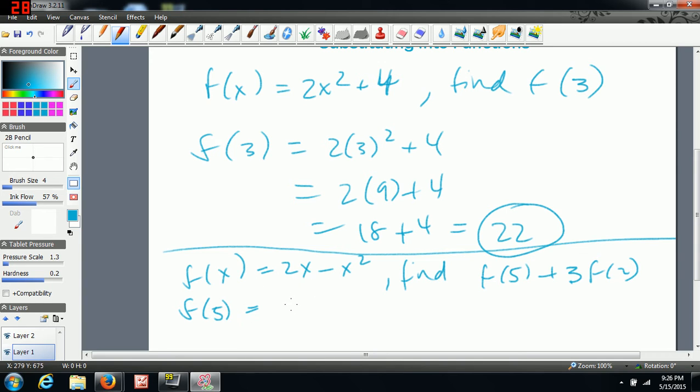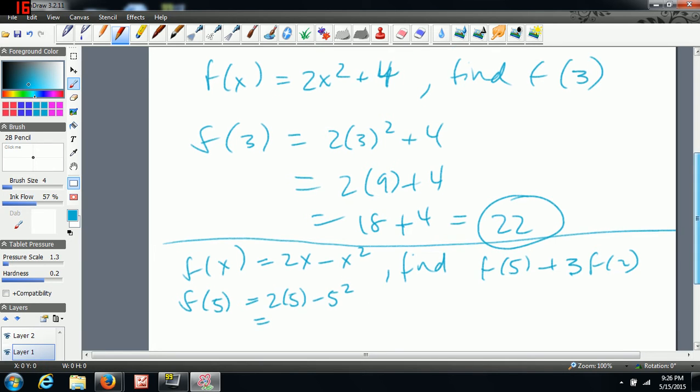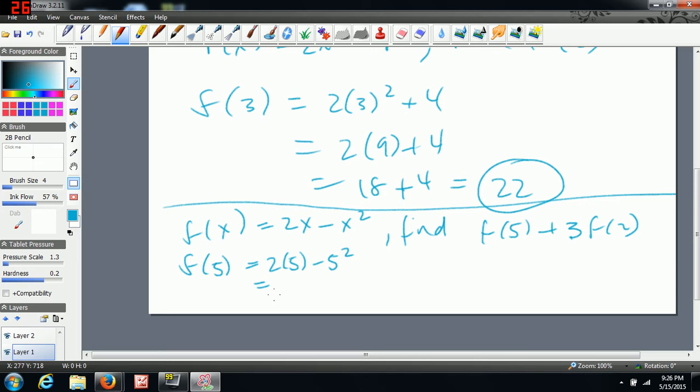To do that, I plug in 5 wherever I have an x. So 2 times 5 minus 5 squared. And again, I'm going to solve that using BEDMAS. So I'm going to do exponents first, and I can do multiplication here. So 10 minus 25, negative 15. So I find f of 5.